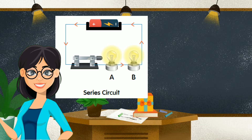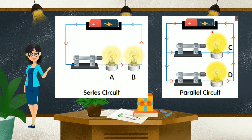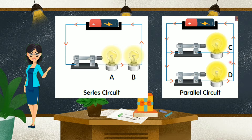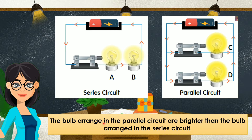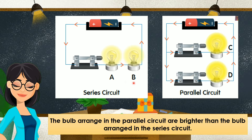Look at this diagram. This is a series circuit and this is a parallel circuit. Both circuits have one dry cell and two bulbs. We have bulb A, bulb B, bulb C, and bulb D. The bulbs in the parallel circuit are brighter than the bulbs in the series circuit — that is, bulb C and D are brighter than bulb A and B. As we can see here, bulb A and B are dimmer than bulb C and D.